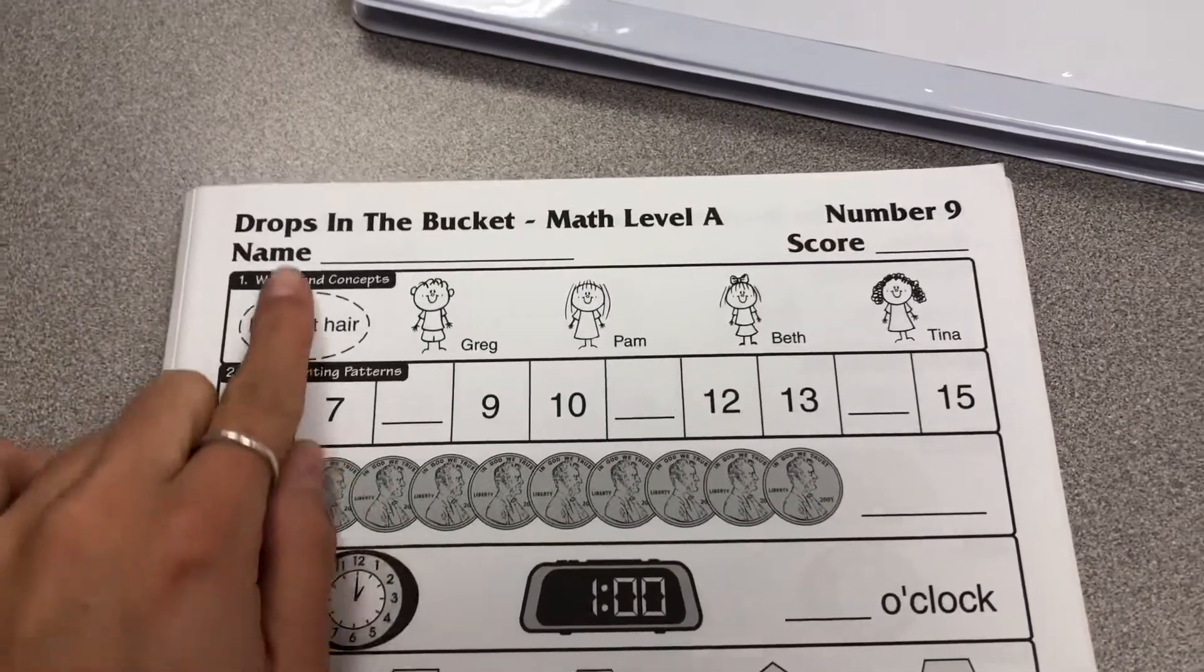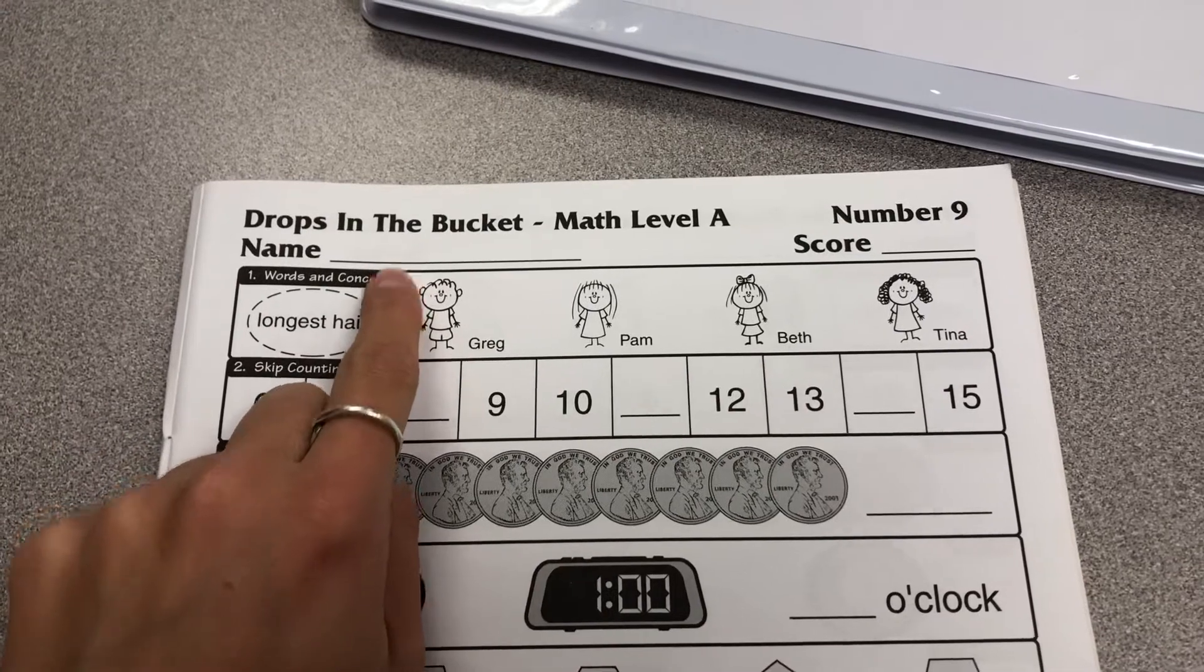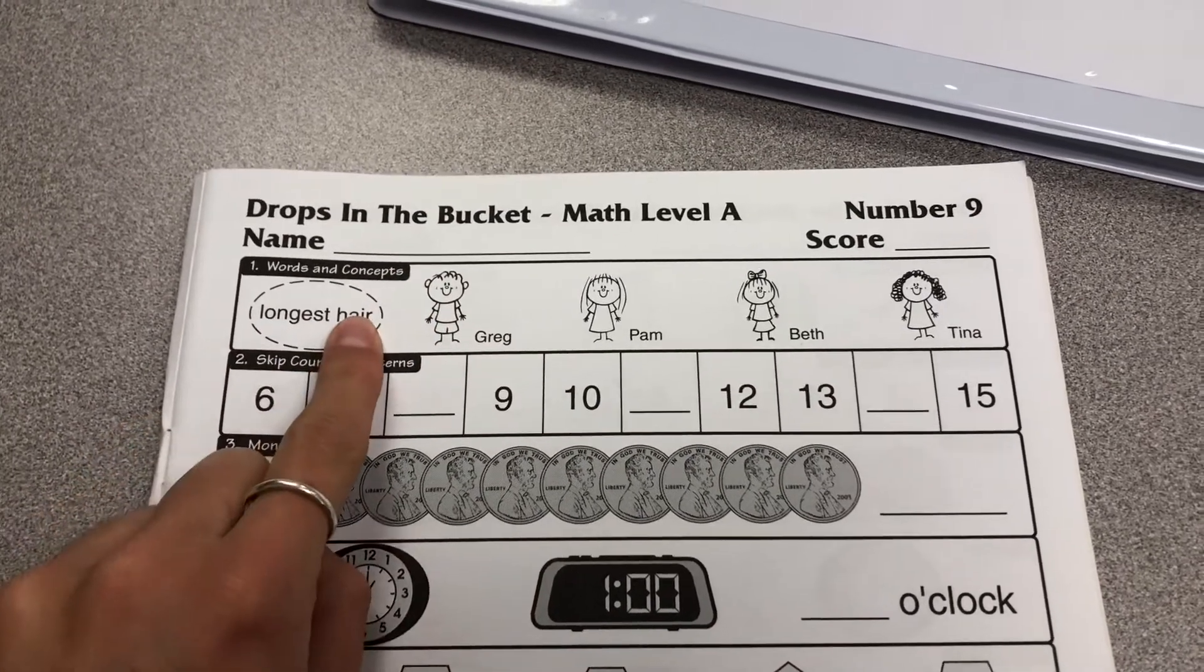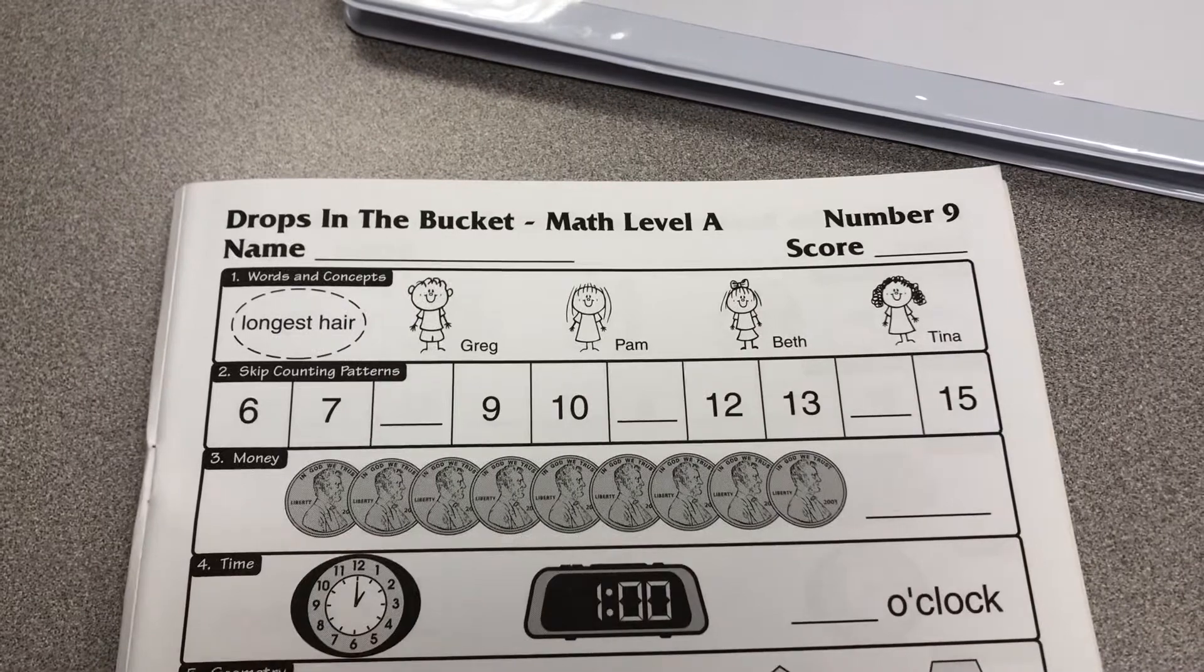This is your bucket paper. Put your name on the line. Longest hair. Please circle the person who has the longest hair.